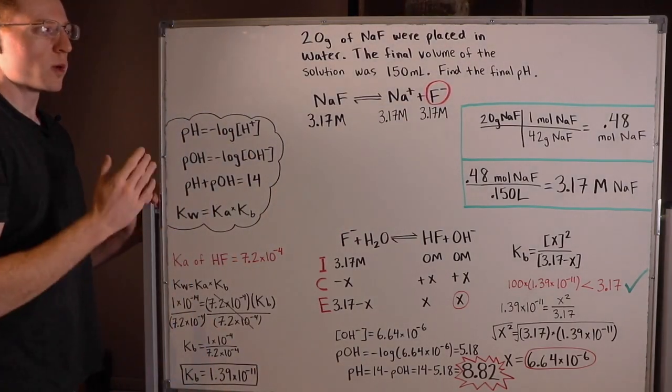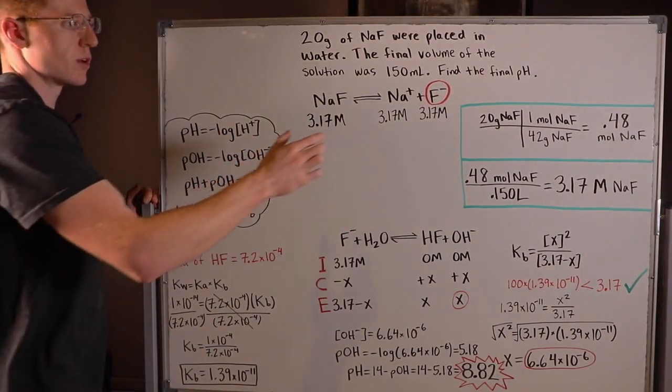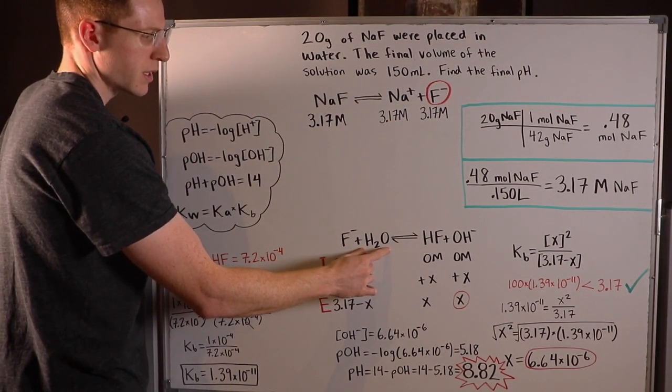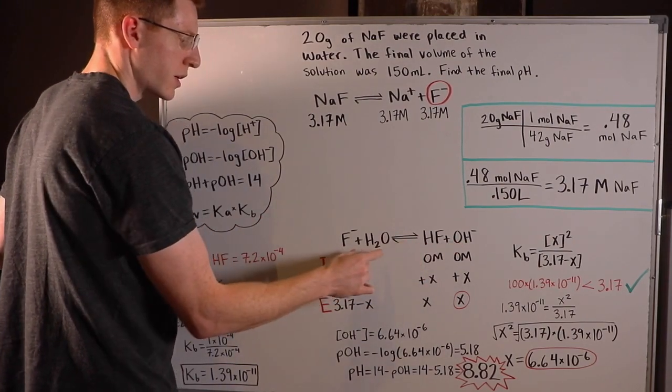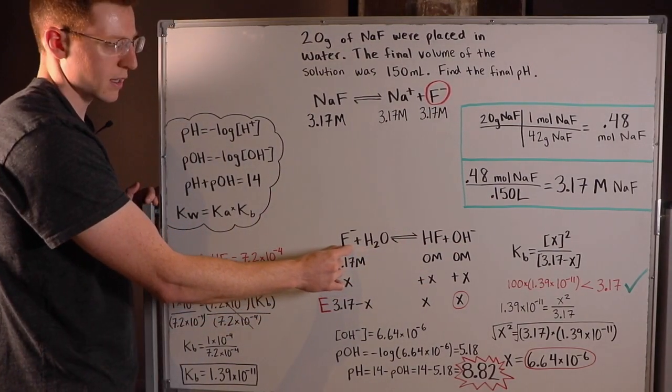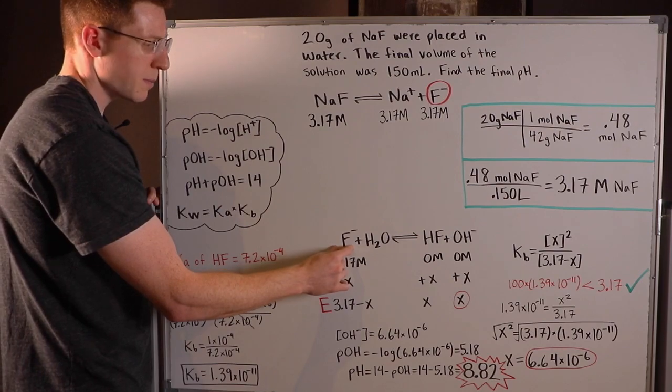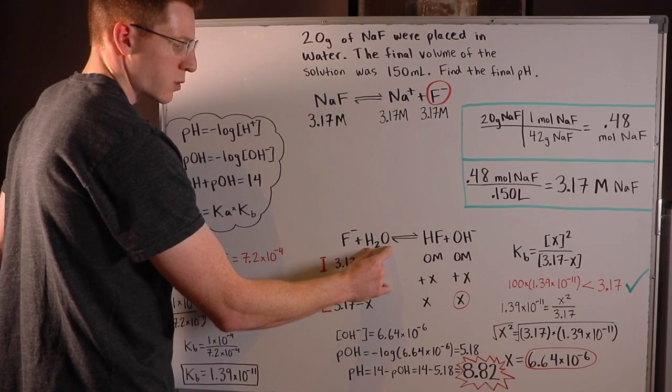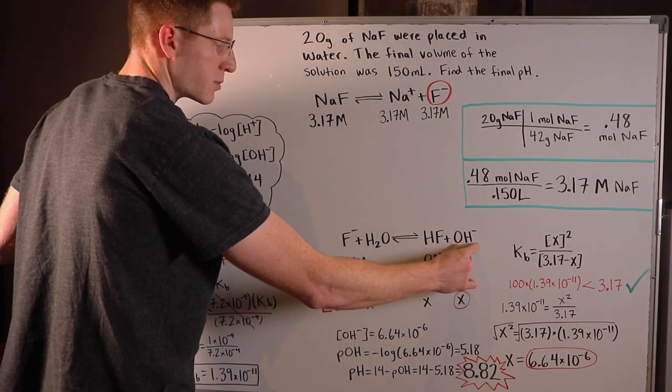So the next step, once you decide which ion is going to affect the pH of the solution, is you allow it to react with the water in that solution and make its products. So we know F- is a weak base, right? So it's actually going to accept a proton to become HF, while water is going to donate a proton and act as a weak acid in this case to become OH-.